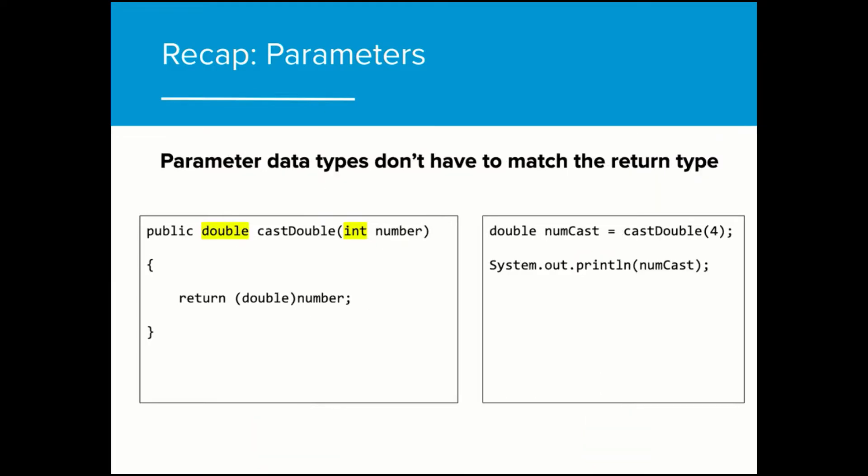When we write parameters, the data type does not have to match the return type. In this example, the formal parameter int number is passed into the method and the return type that is being returned to the program is a double. As long as the return type matches the value being returned, parameters do not have to match the return type.